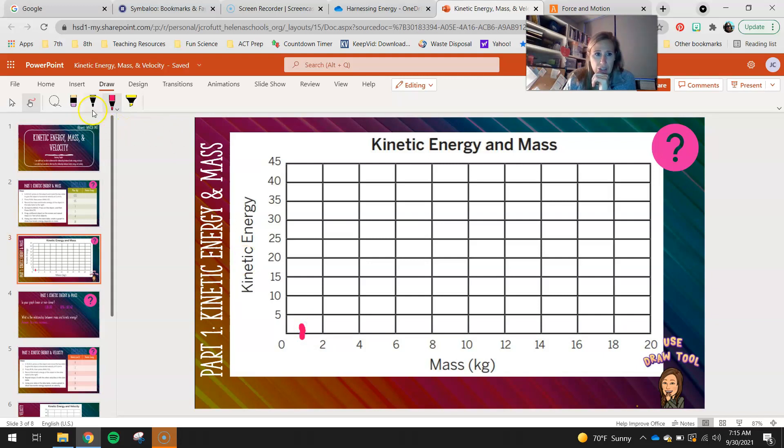And my kinetic energy was two kilojoules. So here's my mass right here. So one right here. And then my kinetic energy is about two. So my first dot will be right there. You guys are going to have two dots to the left of that and then a bunch of dots to the right of that. So you guys will go ahead and you will do all seven of your dots.